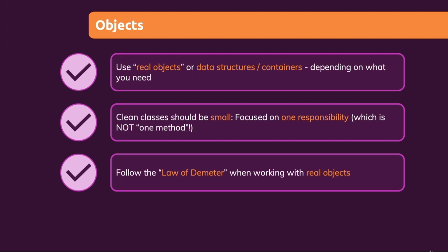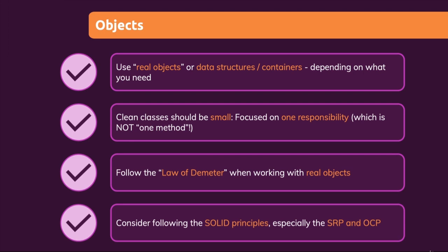Speaking of maintainability, especially when using an object-oriented programming style, you should follow the SOLID principles. The SRP and OCP matter especially, as explained in the classes and objects module. But if you follow these principles in general, you will often end up with cleaner code automatically, because these principles do not just enforce maintainability — they also make the code easier to understand.